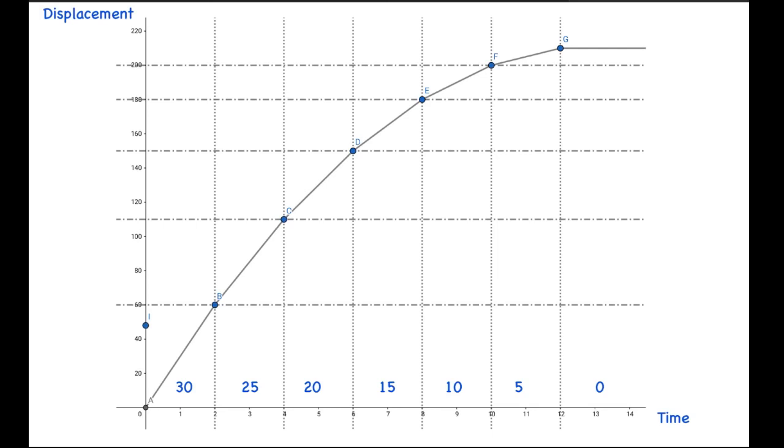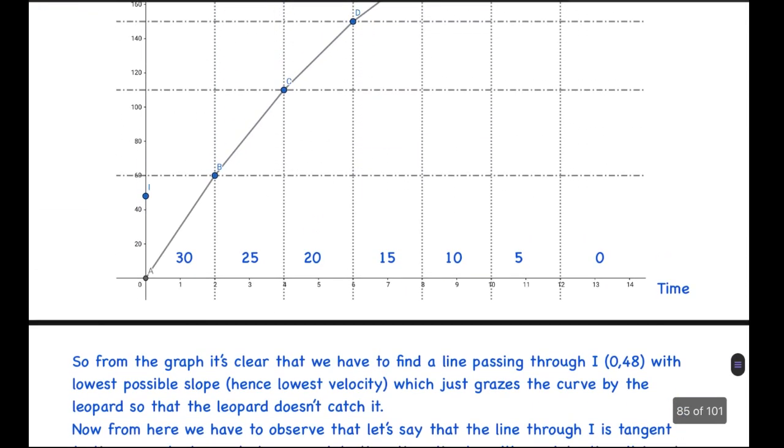And the deer goes with some constant velocity along a straight line like this. So if this line intersects this curve somewhere, then we can see that the leopard will have crossed the deer, and that's not what we want. So basically, this line has to be always above this curve and should not intersect, or rather can only be tangent to this curve in the extreme case.